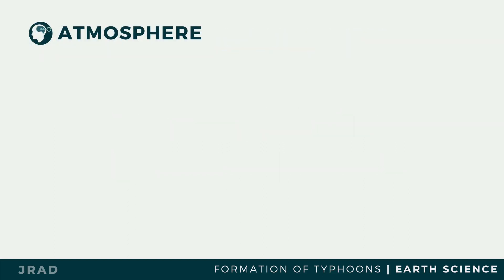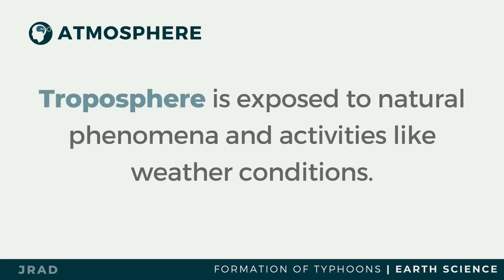Layers of the atmosphere are not visible to the naked eye. It serves as a protective layer of gases that shields us from harmful effects of too much rays from sunlight. Among the five layers of the atmosphere, the troposphere, which is the lowest layer, is exposed to natural phenomena and activities like weather conditions. It is the part of the atmosphere where clouds are formed.